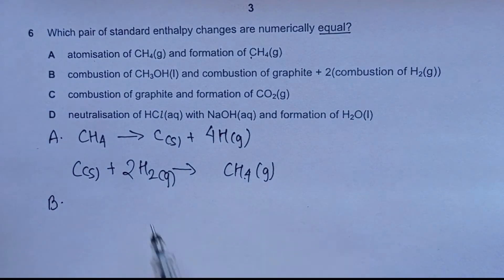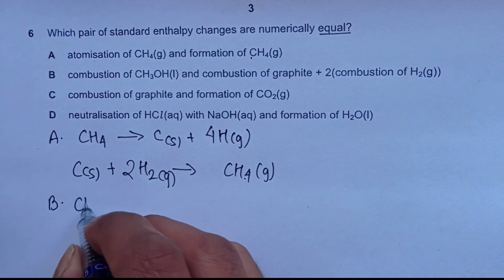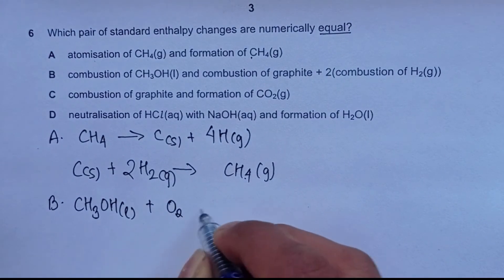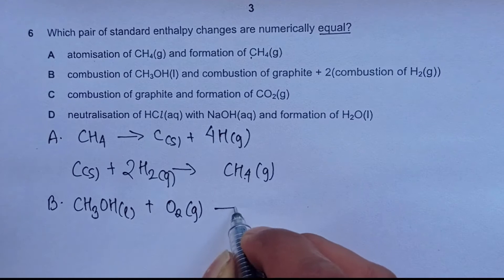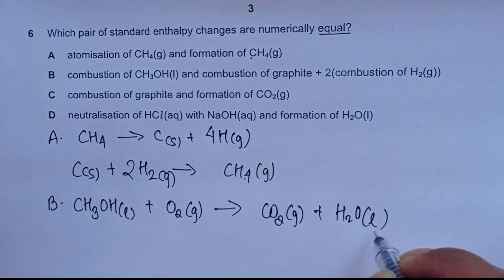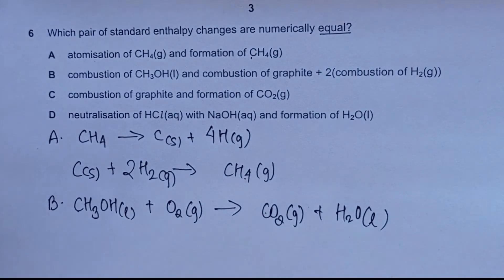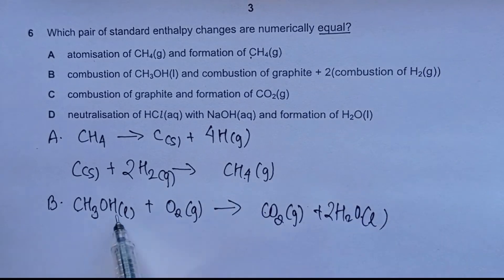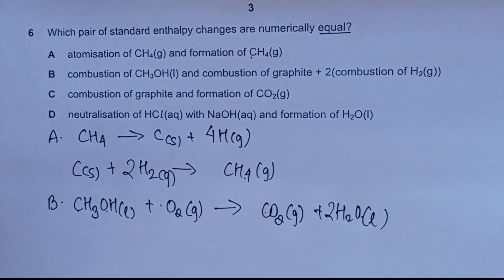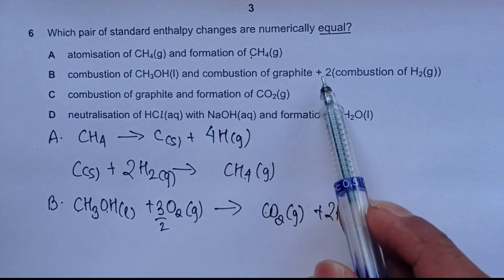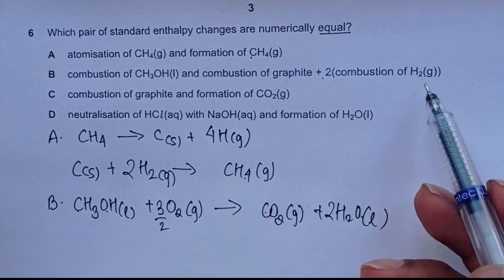For choice B, combustion of CH₃OH means CH₃OH reacting with O₂ gas to give CO₂ (gas) and H₂O (liquid). Balancing: one carbon, four hydrogen giving two H₂O, and oxygen totalling three and a half O₂, so we write 3/2 O₂. This is compared to combustion of graphite plus two times combustion of H₂.